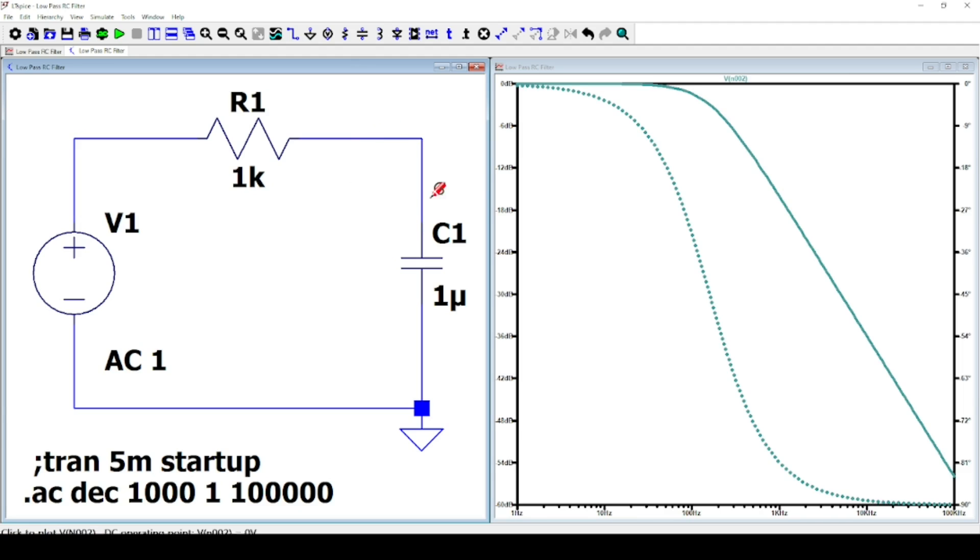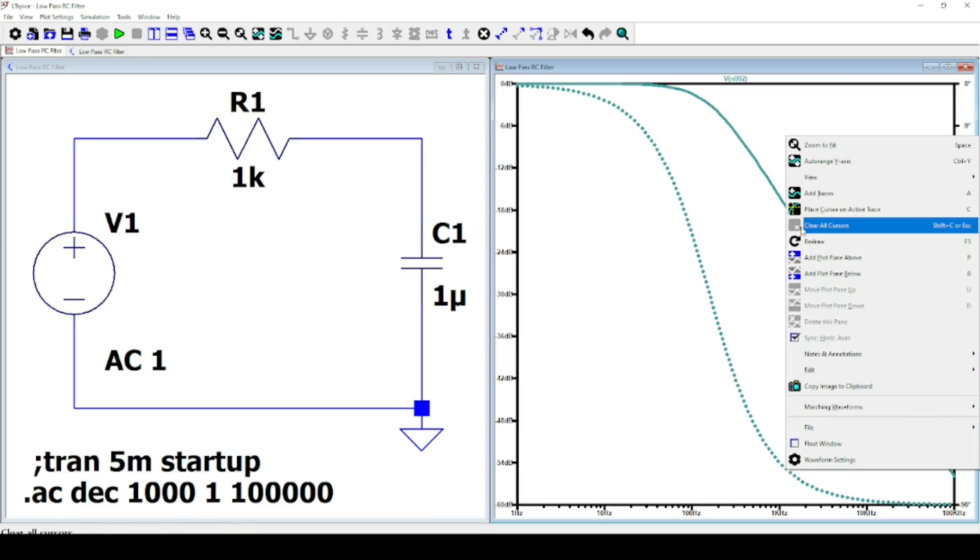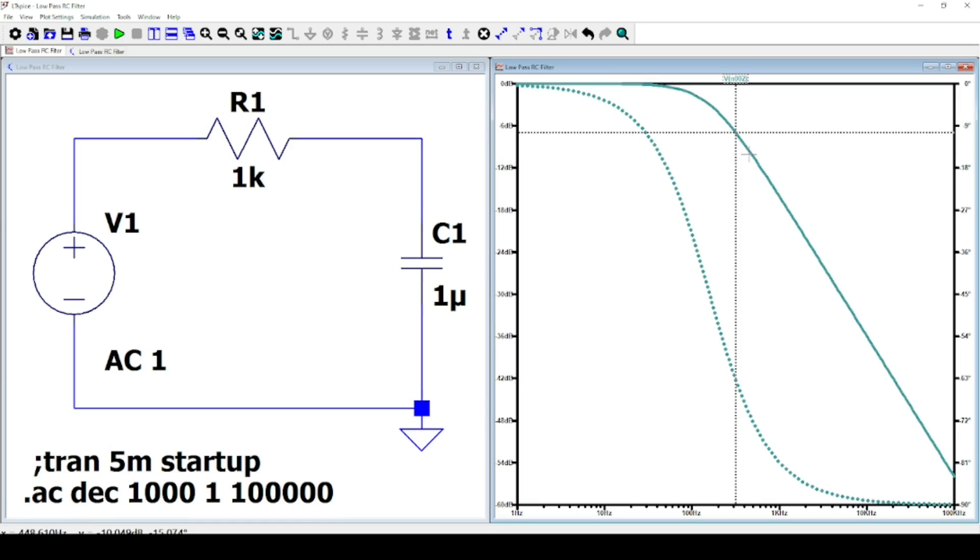As you can see, this is a Bode plot. Now let's highlight our cutoff frequency using the cursor that you can show by right-clicking on the plot window. We have here two curves: the phase shift and the gain.